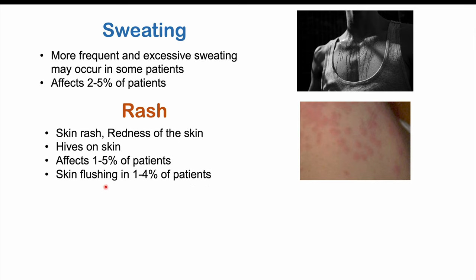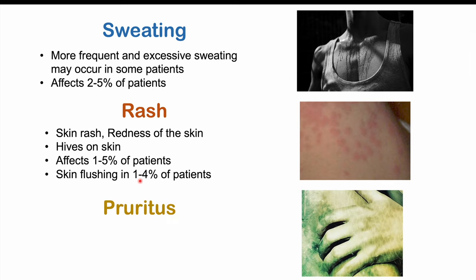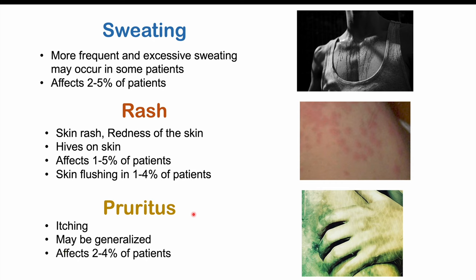There can also be skin flushing, where the skin becomes very reddened and then can go away, occurring in one to four percent of patients. Pruritus — an itching sensation — can also occur, may be generalized or related to the skin rash, and affects two to four percent of patients.